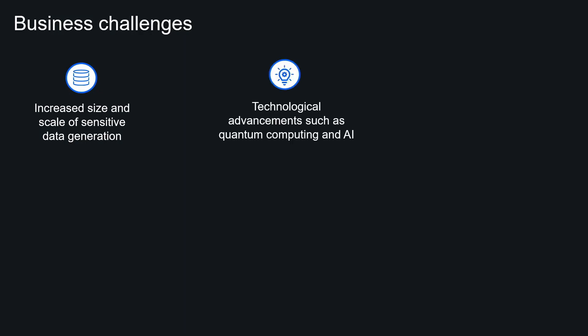Technological advancements have a positive impact, but they also come with their own drawbacks. With advancements in technology, more innovative tools are available to break the security of information systems — for example, quantum computing. For a normal computer, it takes a trillion years to break the RSA algorithm. For a quantum computer with 4,000 error-free qubits, it would take only a few seconds. Currently, the largest quantum computer has fewer than 100 error-free qubits, but as technology advances, there will be quantum computers with more capacity. Hence, it is challenging to keep security systems updated as technology progresses.